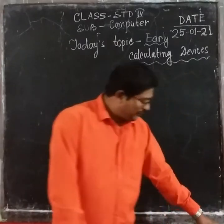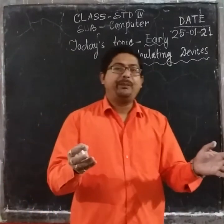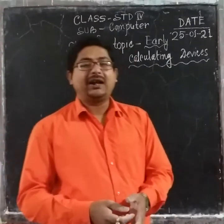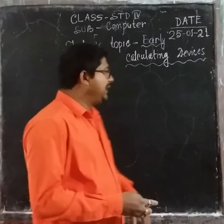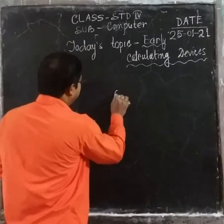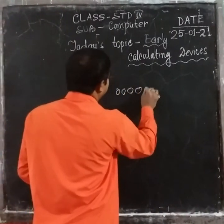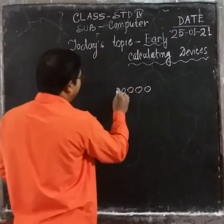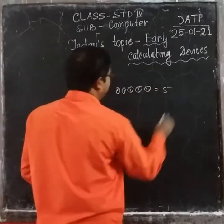Suppose we don't have any equipment to calculate. In that case, people would use a piece of stone. Count them: 1, 2, 3, 4, 5 — that is 5.